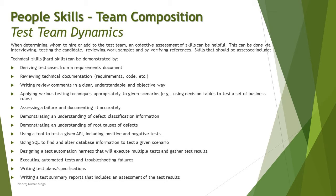Additional technical skills include: using SQL to find and alter database information for a given test scenario, designing a test automation harness that will execute multiple tests and gather test results, executing automated tests and troubleshooting failures related to test scripts, writing test plans and specifications — contributing to the test manager's work — and writing a test summary report that includes an assessment of the test results. These are generic technical things commonly looked for in a tester's profile, though domain and industry-specific skills may also be required.